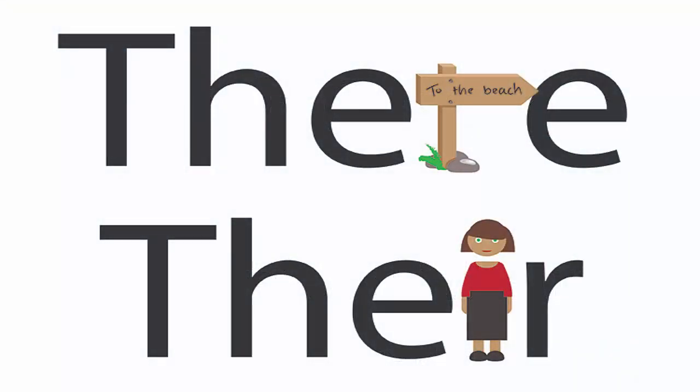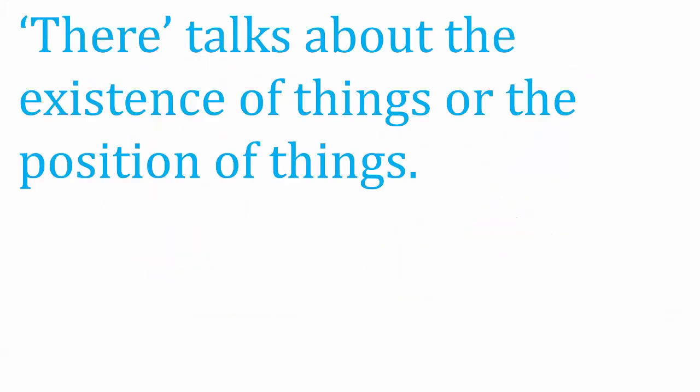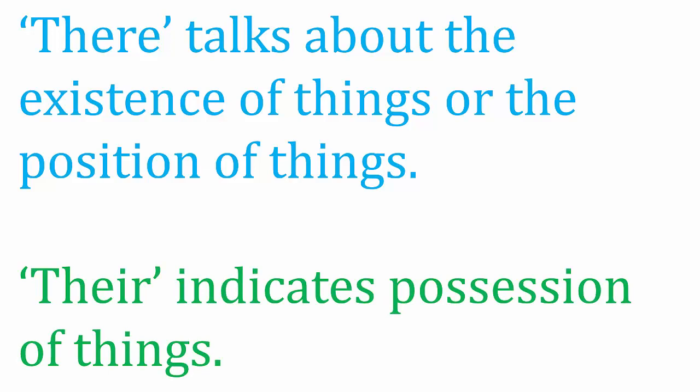There and their are homophones. They sound the same but have different meanings. The word 'there' talks about the existence of things or the position of things. The word 'their' indicates possession — something that belongs to a group of people.